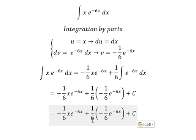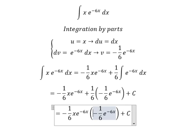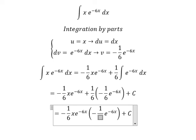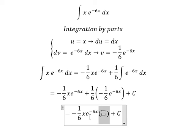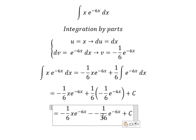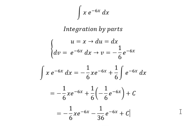So 1 over 6 multiplied by negative 1 over 6, you got negative 1 over 36, and this is the final answer. This is the end, thank you for watching.